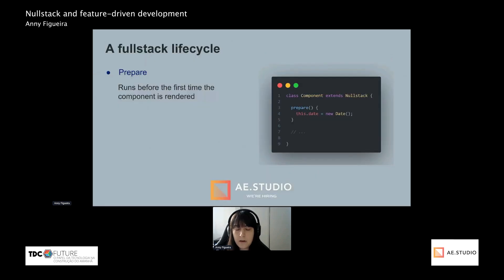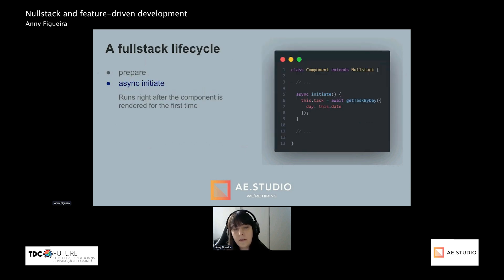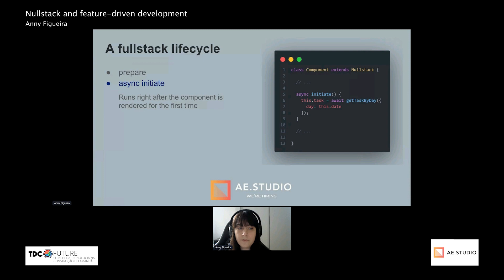NoStack is a full-stack framework, so it has a full-stack lifecycle aimed to be as simple as possible — composed of just five methods. The first lifecycle method is called 'prepare.' It runs before the first time the component is rendered, and it's useful for filling the screen with mock data or a loading state. In this example, it's used to get the current date before doing everything else in the component. The second one is 'initiate,' which can be async and runs right after the component is rendered for the first time. It's useful for bringing data from the database into the application state — in this example, it attributes the state variable 'task' with daily tasks retrieved from the server.